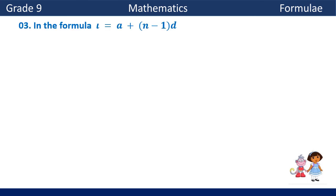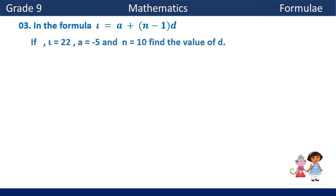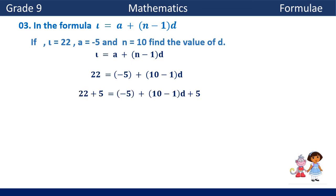Next example: in the formula L equals A plus (N minus 1) times D, if L equals 22, A equals minus 5, and N equals 10, find the value of D. Using Method 1, substitute the given values. Add 5 to both sides to remove minus 5, giving 27 equals 9D. Divide both sides by 9, giving D equals 3.